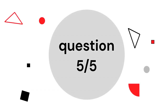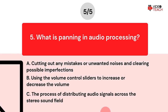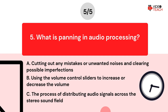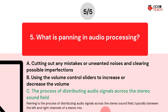Question number five. What is panning in audio processing? Option A: Cutting out any mistakes or unwanted noises and clearing possible imperfections. Option B: Using the volume control sliders to increase or decrease the volume. Option C: The process of distributing audio signals across the stereo sound field. The correct answer is option C. Panning is the process of distributing audio signals across the stereo sound field, typically between the left and right channels of a stereo mix. Traditional recording devices had a pan control for every source channel. In audio mixing software, the pan control appears as sliders on the screen, which can be manipulated to send source sound to the left or to the right.